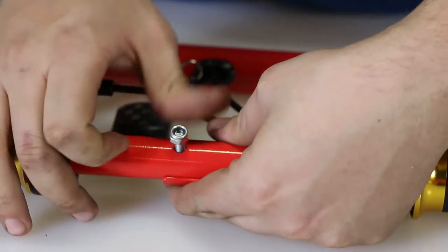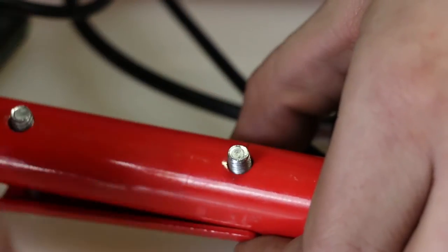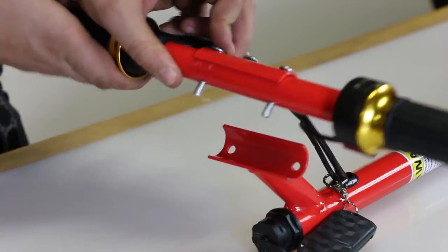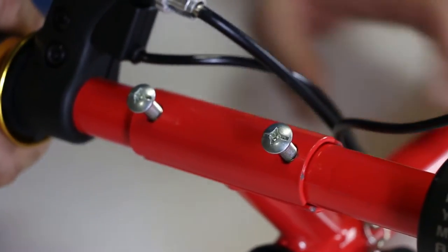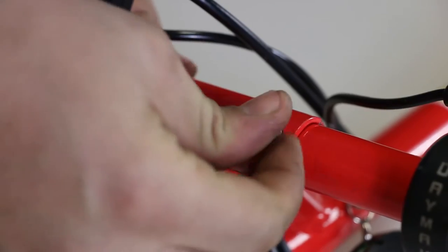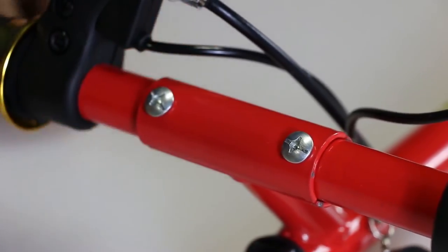To install the handlebar, unscrew the two nuts and place the handlebar on the mount. Push the two bolts through the mount and tighten both with a screwdriver and a wrench.